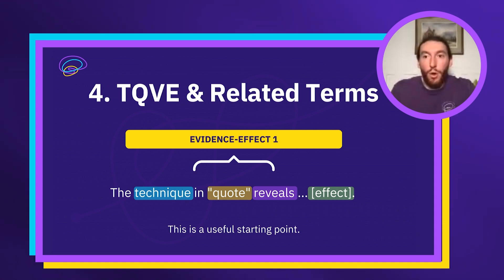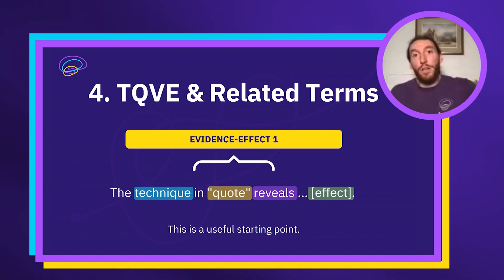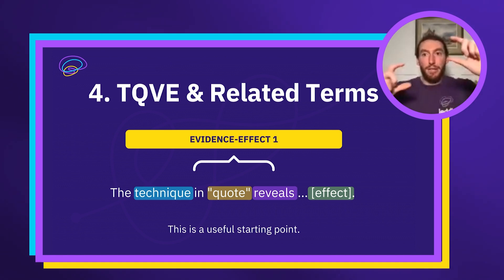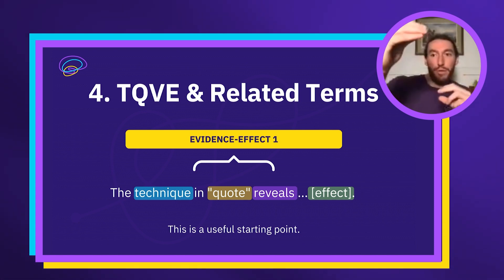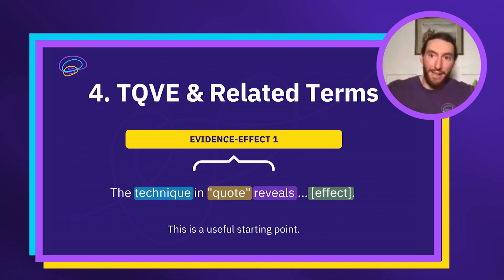If you were doing a four-body-paragraph essay, I would only recommend that for Module A. For advanced students, if you're doing the comparative essay for Module A — Textual Conversations — you might consider doing four bodies, whereby you split the essay into two halves and consider how two key ideas apply to each text, going back and forth in an A-B-A-B structure. Standard students should never have more than three body paragraphs.